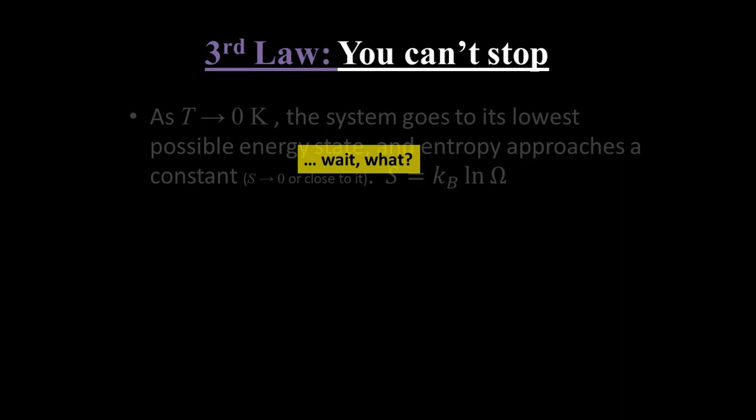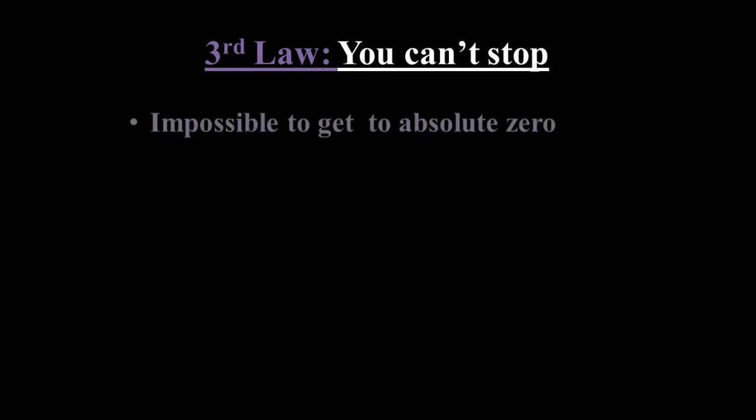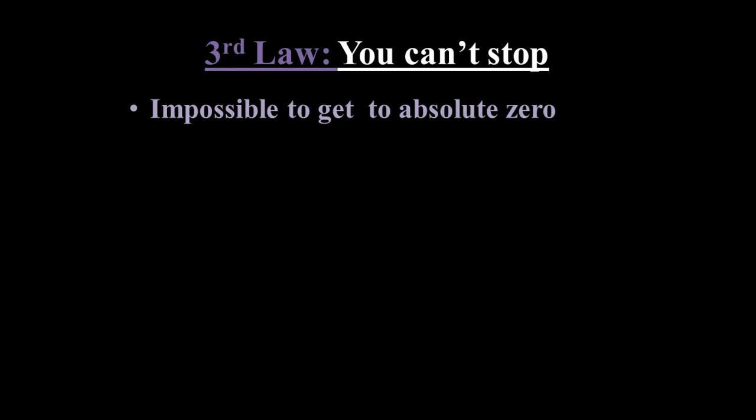So the third law is often restated as its most immediate consequence, namely, it's impossible to get to absolute zero. Why this is may seem confusing if you think of temperature as a simple continuous trend line. What makes it quote-unquote easy to cool down from 2 Kelvin to 1 Kelvin, yet impossible to make the seemingly equal step from 1 to 0?